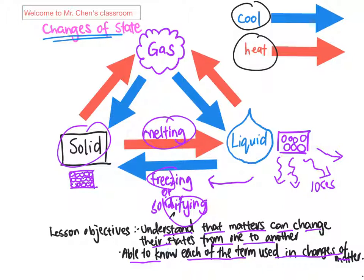Now let's look at liquid to gas. So when you give more heat to liquid, the particles in the liquid will break down even more and now they become more free. When they become more free, they turn into gas. This process is called the boiling process.